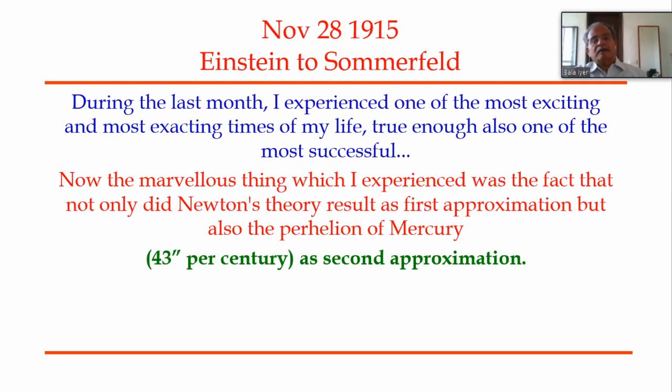Just three days after he came up with the general theory of relativity, Einstein wrote to the famous physicist Sommerfeld: 'During the last month, I experienced one of the most exciting and most exacting times of my life — true enough, also one of the most successful.' He was referring to the fact that not only did Newton's theory result as the first approximation, but also the perihelion of Mercury — 43 seconds of arc per century — as the second approximation.